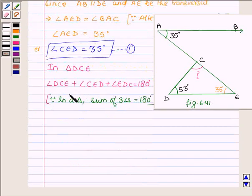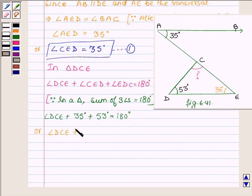Angle DCE we have to find out. Angle CED is equal to 35 degrees and angle EDC is 53 degrees. So angle DCE plus 35 plus 53 equals 180 degrees. Thus angle DCE plus 88 equals 180 degrees.